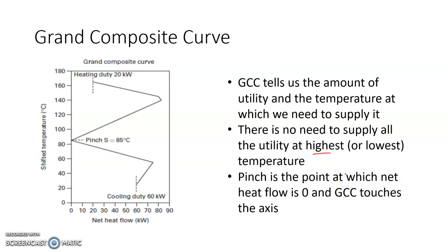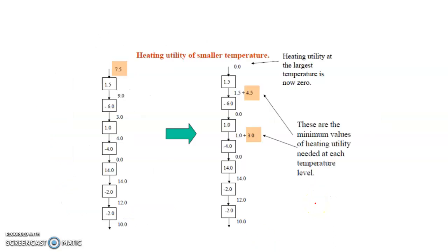What we need in order to save money is colder hot utility and hotter cold utility, because colder hot utility is cheaper compared to hotter hot utility. Similarly, hotter cold utility is cheaper compared to colder cold utility, because we need to invest money in getting hot utility hotter and cold utility colder. We can try to optimize the use of costly utility by studying the GCC properly. According to this particular cascade, you require 7.5 units at the highest possible temperature to make the energy balance work, but that can be done in parts — you can supply 4.5 megawatts at one level and the remainder at another.